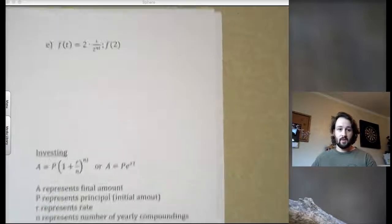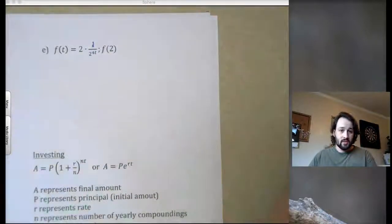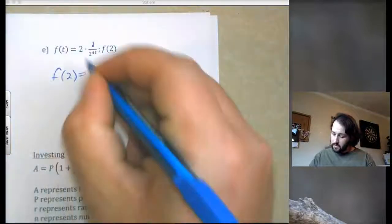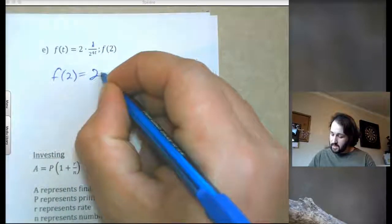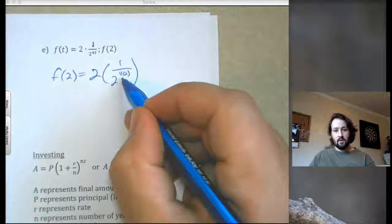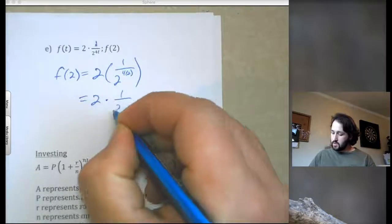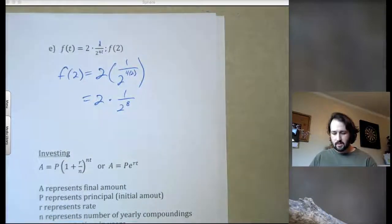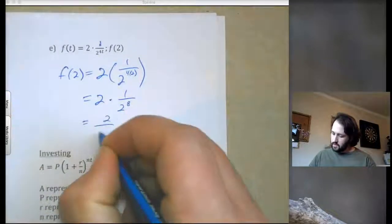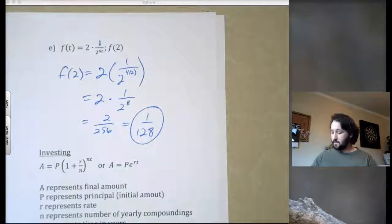All right. Moving on. So here we have f of t equals, I think that's 1 over 2 to the 4t. So still, f of 2, still just plug in 2. So f of 2. Again, it doesn't matter what the variable is. This means I'm plugging in instead of t. So 1 over 2 to the 4 times 2. Well, my exponent down here, 4 times 2 is 8. So I have 2 times 1 over 2 to the 8th. 2 to the 8th, I think, is 256. Yeah. So I have 2 over 256, which is the same thing as 1 over 128. That would be what we're looking for.